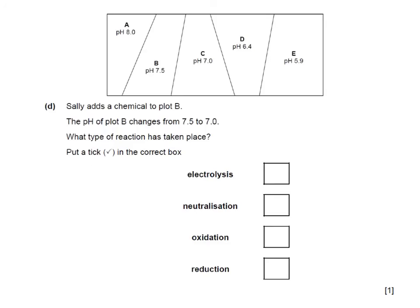Here's a past paper question again. Sally adds a chemical to plot B. The pH of plot B changes from 7.5 to 7. What type of reaction has taken place? Well, if the pH of B was 7.5, that means it's slightly alkaline. And it's become 7, which is neutral. So the type of reaction is neutralisation.